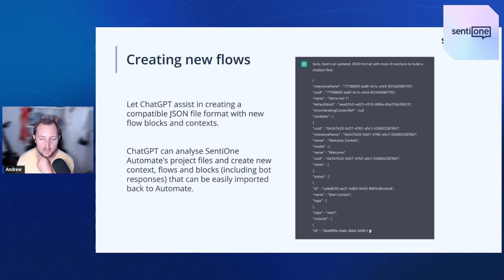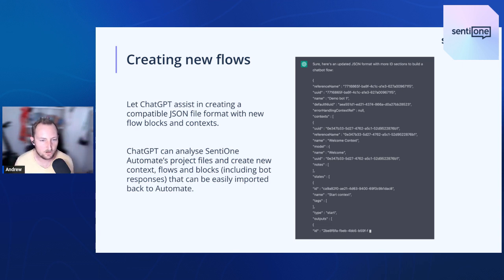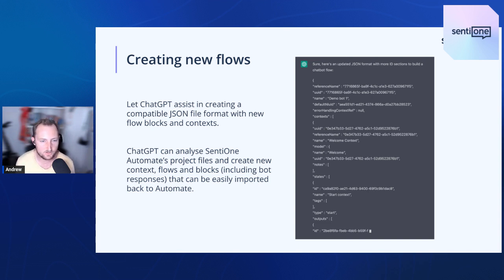Creating new flows: what we've been experimenting with at SentiOne is creating the whole flow itself — delivering or generating a JSON file that works with our platform or other platforms to generate all the steps within the visual dialogue building component. That means you can import it straight away, start to use it, test it, and deploy it very quickly.